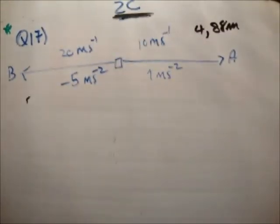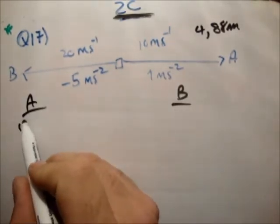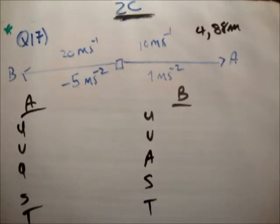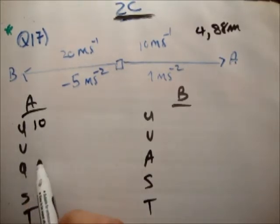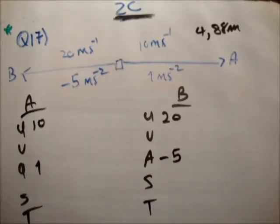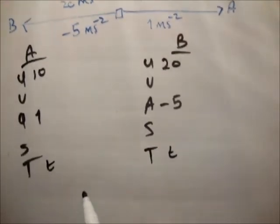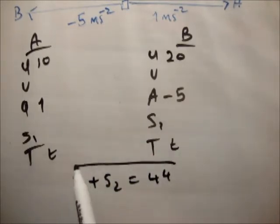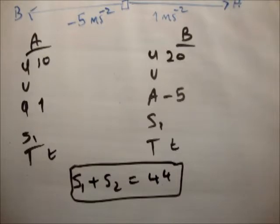So there is, of course, always a second part to these questions. It says, at what time were they half this distance apart? So we want to know at what time were they 44 meters apart. Look at car A and car B. Some variables haven't changed. Car A started at 10, accelerated at 1. And B started at 20 and decelerated at 5. Once again, the time is the same. The thing we need to know here is that S1 plus S2 equals 44 meters.